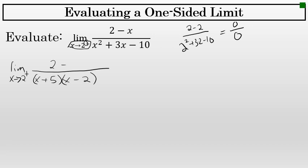The numerator is (2 minus x). This is close to the quantity (x minus 2) in the denominator, but it's not exactly the same. Before I can eliminate those, I would have to factor a negative 1 to the front of the numerator — factoring a negative to the front allows me to reverse the order of the two terms being subtracted.